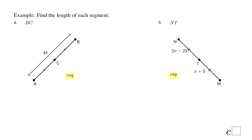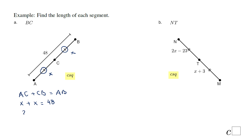Let's take a look at another example. Find the length of segment BC. You notice BC and AC are congruent. First thing I can do is write: AC plus CB equals AB. Since they are congruent, I'll call both X. So X plus X equals 48 — that is the length of segment AB. We have 2X equals 48. Divide by 2 and we get X equals 24. That X is nothing else than the length of segment AC or BC. So BC is 24.